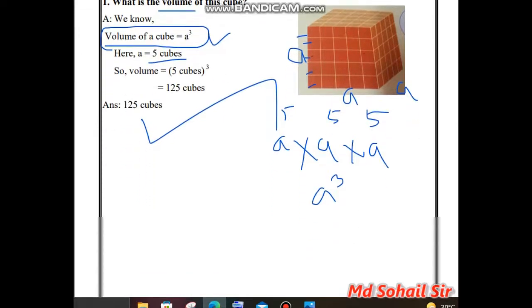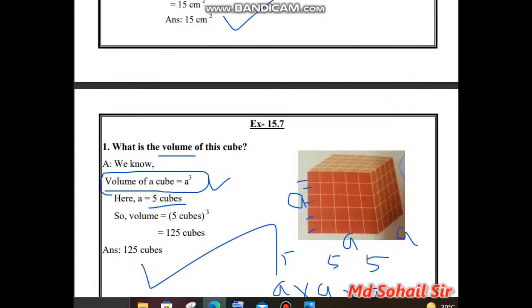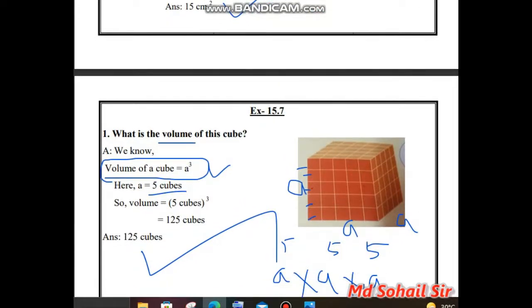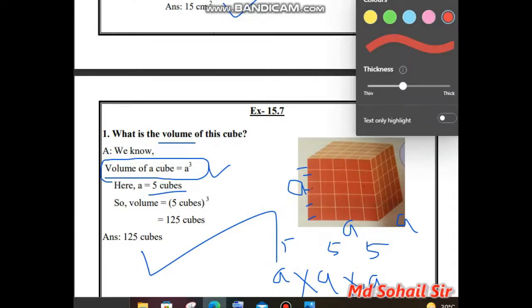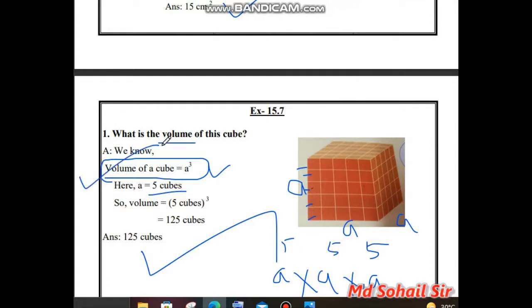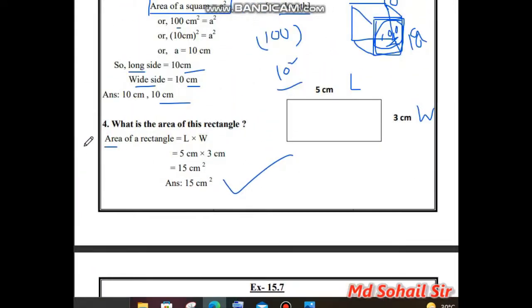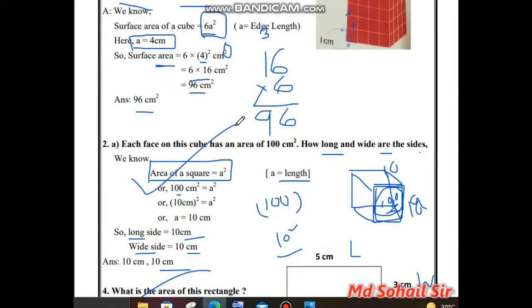So in this way, we can work out. In your conclusions, if you see the first formula we got it. Volume of a cube is a³, area of a rectangle is length multiplied by width, area of a square is a², and surface area is 6a². These are very important for you, for your maths to work out easily, you can remember.